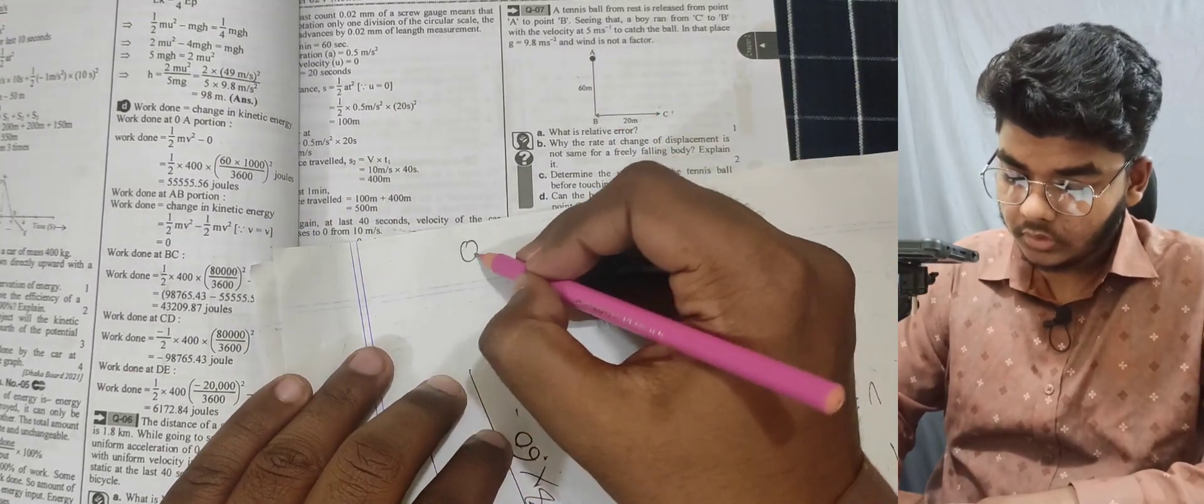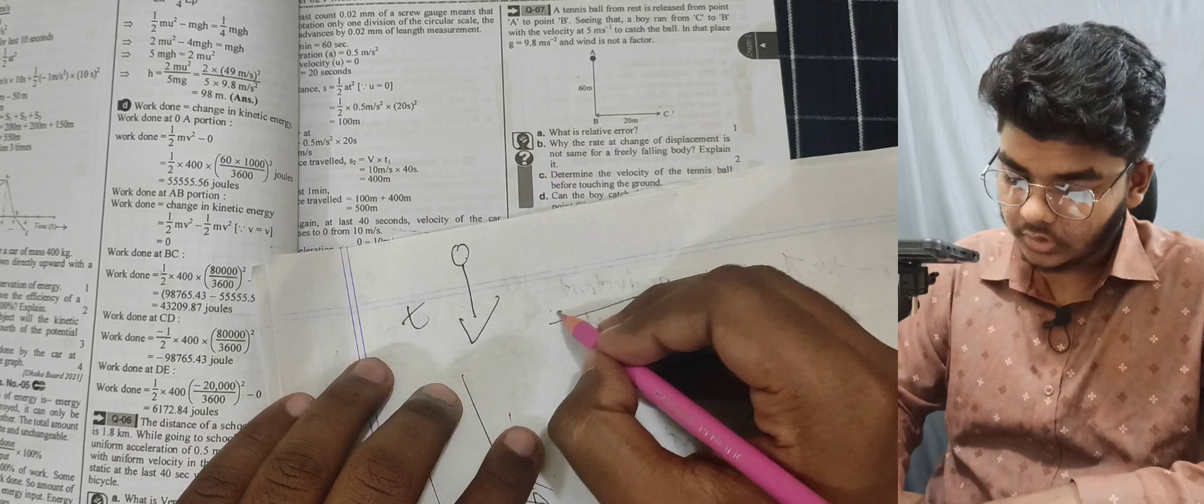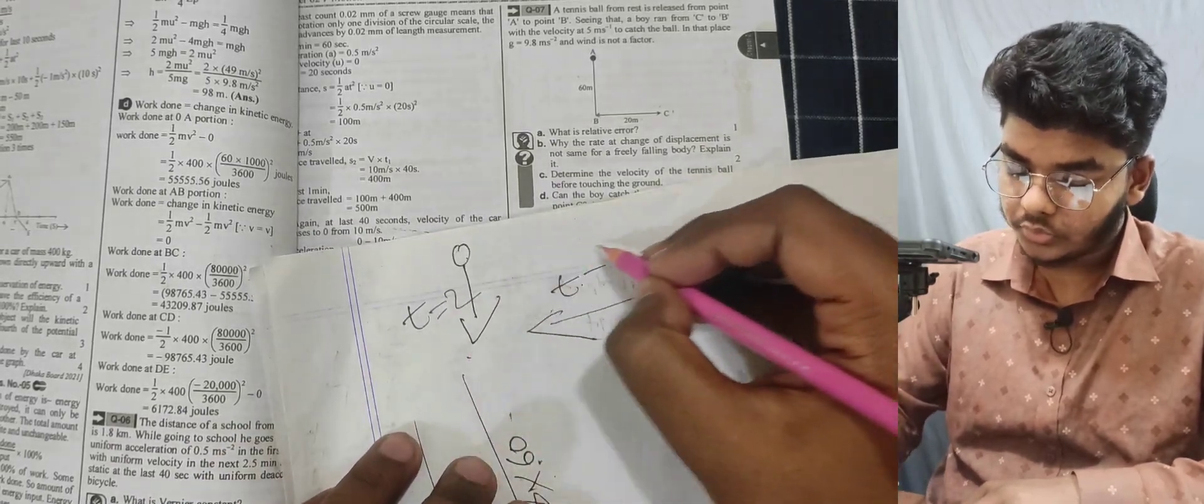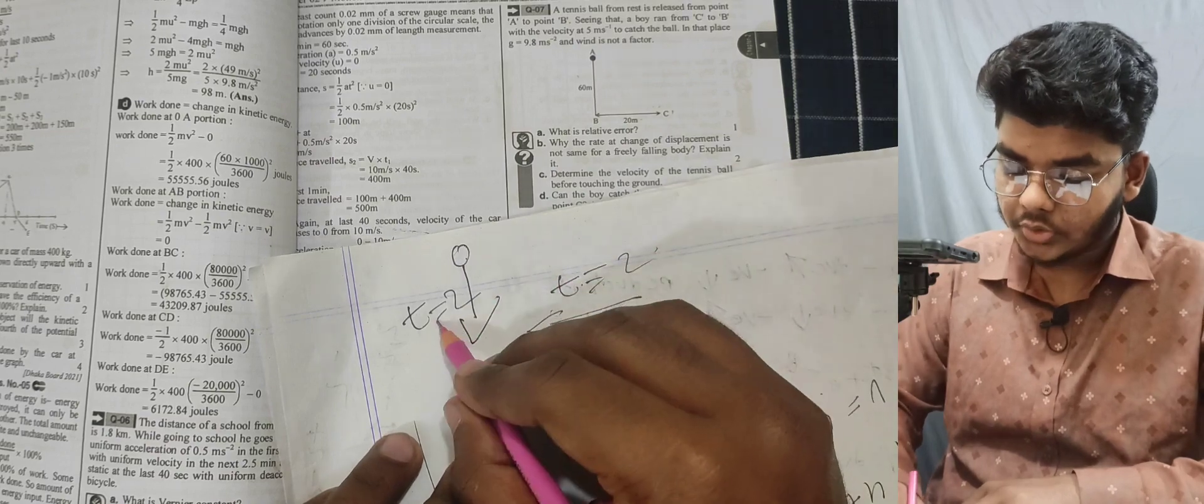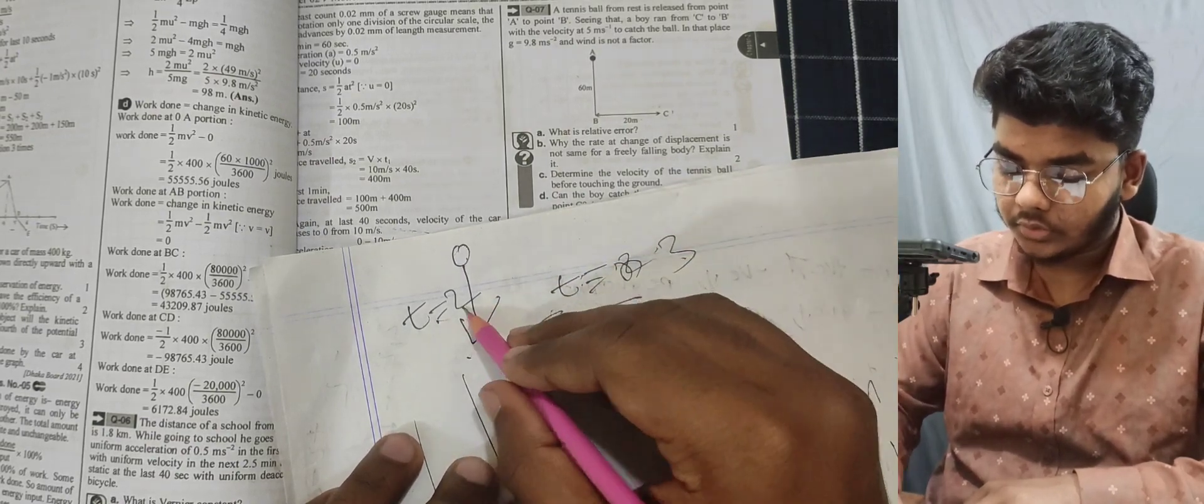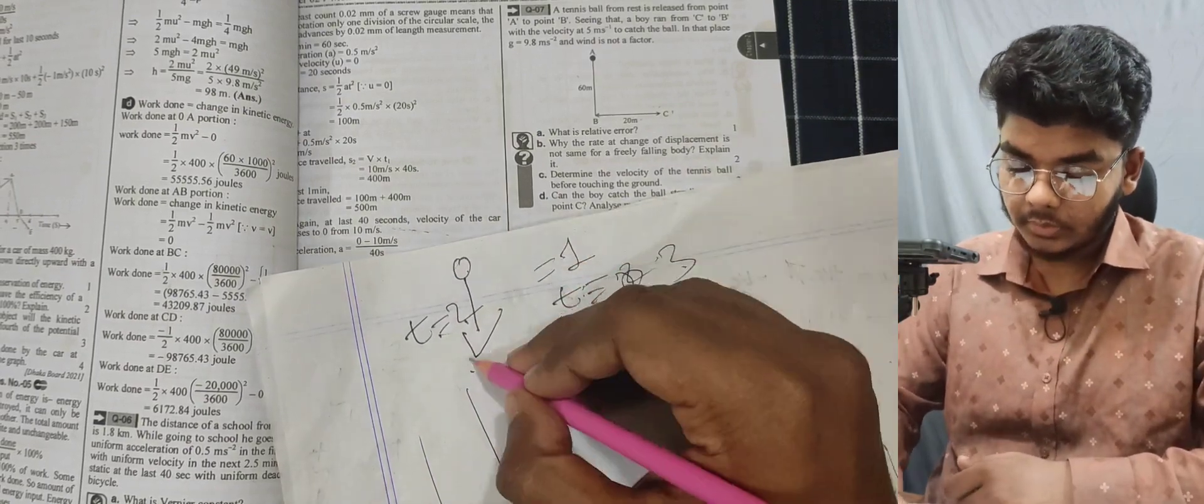Calculate the time for the ball to reach the ground and the time for the boy to run. We need to check if the times are the same - will it be 2 seconds or 3 seconds for the boy to catch the ball?